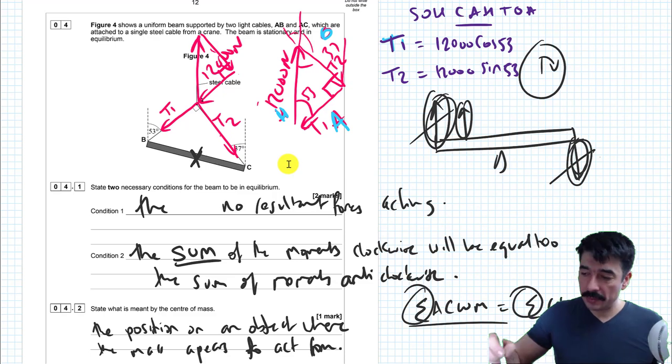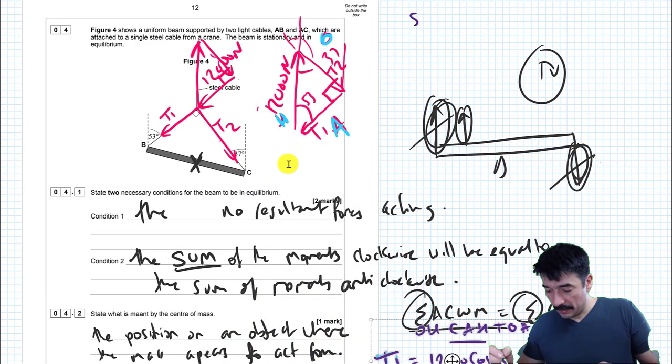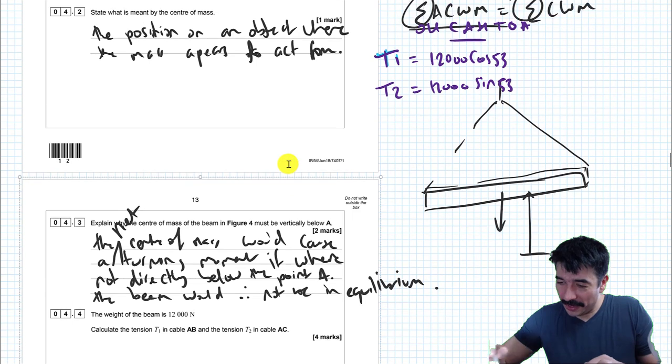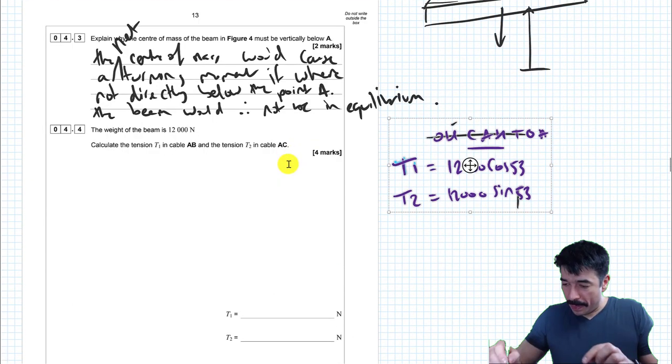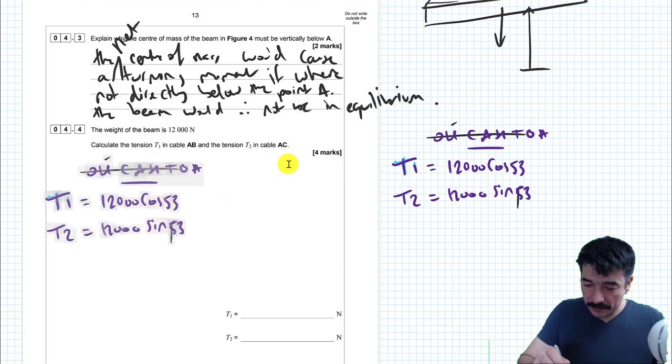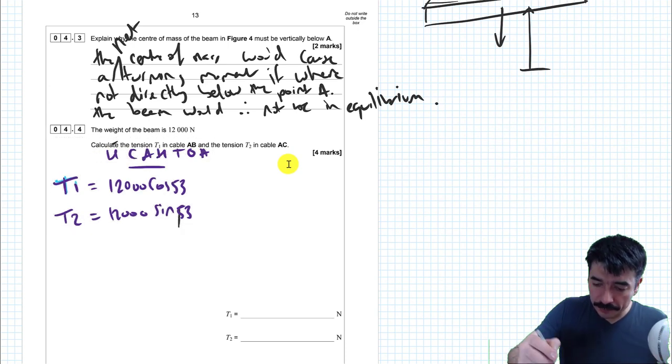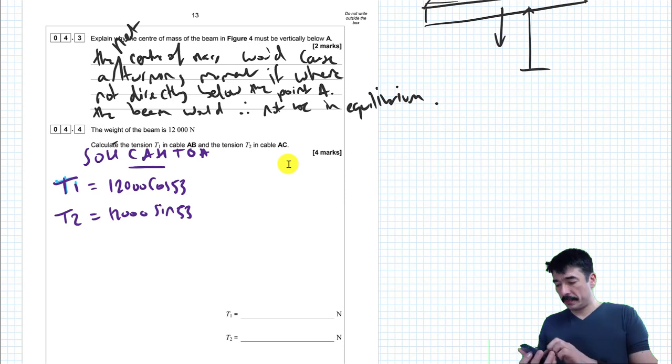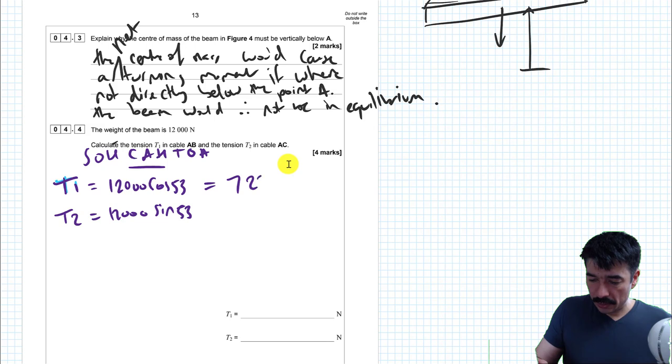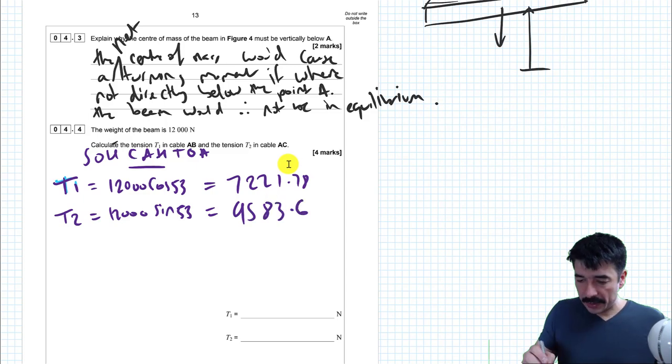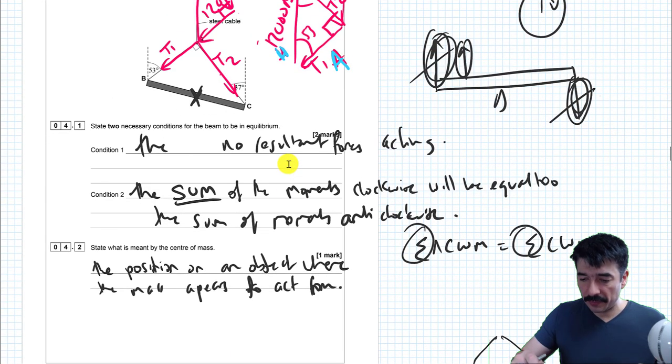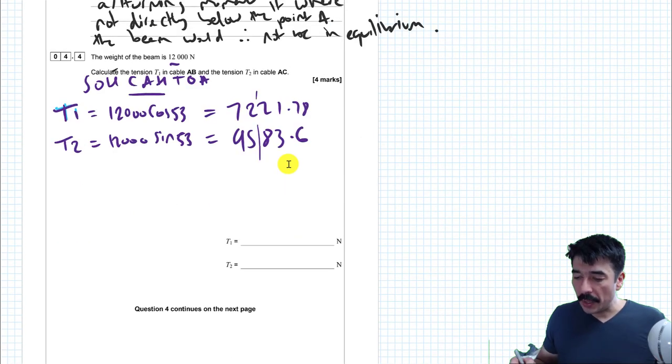So let's work out 12,000 times cos 53. Get me 7,221.8. This one comes out as 9,583.6. So I'll write my answers in. This is given to two significant figures. My angles are all to two significant figures, 37, 53. So I'll get my answers to just two significant figures. So this is 7,200 and this is 9,600.